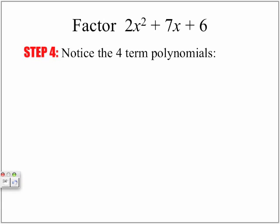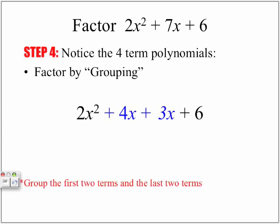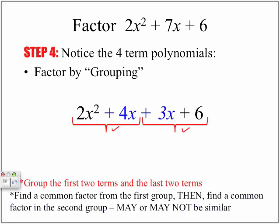Notice we now have a four-term polynomial. Whenever we have four terms, one of the rules from the guideline for factoring is that we factor by grouping. So here is our four-term polynomial — the expanded version. We're going to group the first two terms together and the last two terms together. Then we find a common factor from the first group and another common factor from the second group — they may or may not be the same.